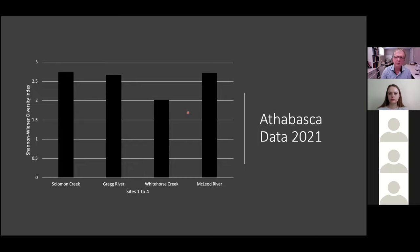So looking at this, remember, the higher is better. Solomon Creek is number one. Close second to McLeod River. Greg River is a very close third, this is almost like speed skating. And bringing up the rear is Whitehorse Creek. McLeod River is suddenly doing well again, even though we know it had the fewest specimens collected.